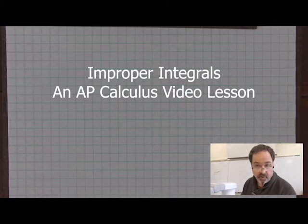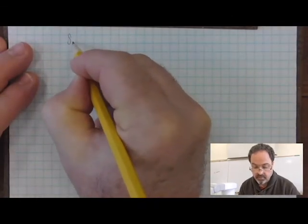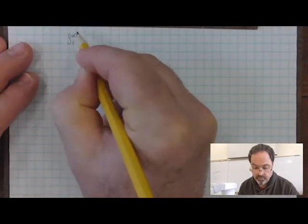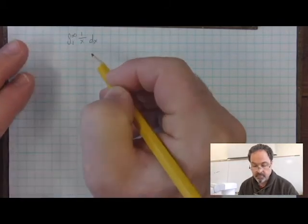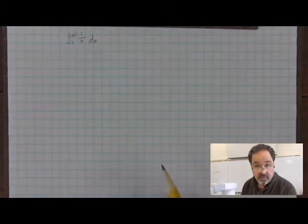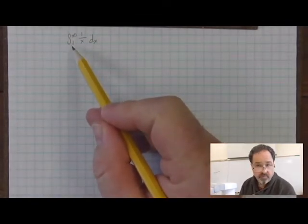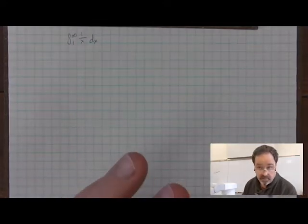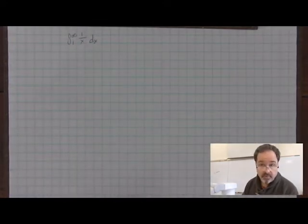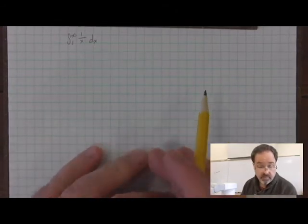This is a video lesson on improper integrals. Let's take a look at this integral from 1 to infinity of 1 over x with respect to x. This appears to be a definite integral because it has bounds, but it goes from 1 to infinity, and infinity isn't a value. It can't be a stopping point for area under the curve because we can never reach infinity.